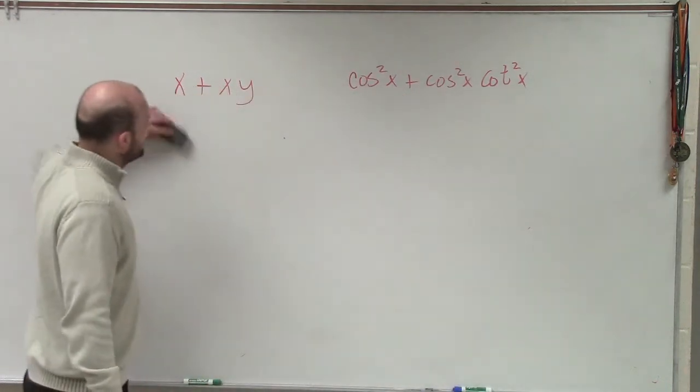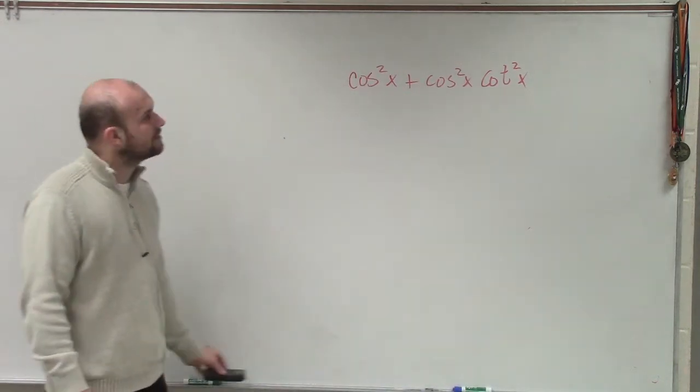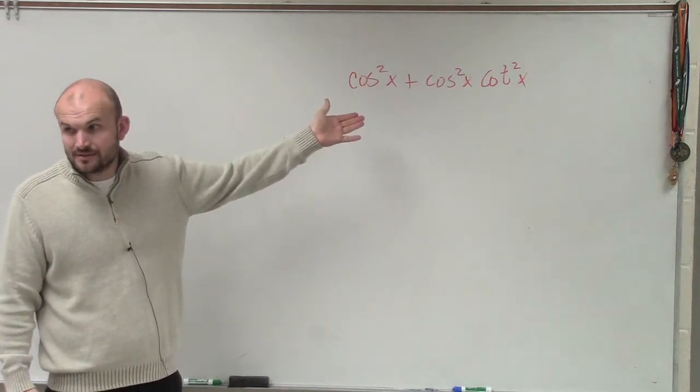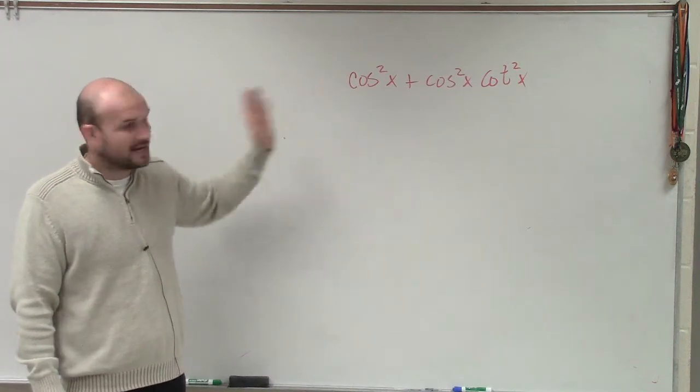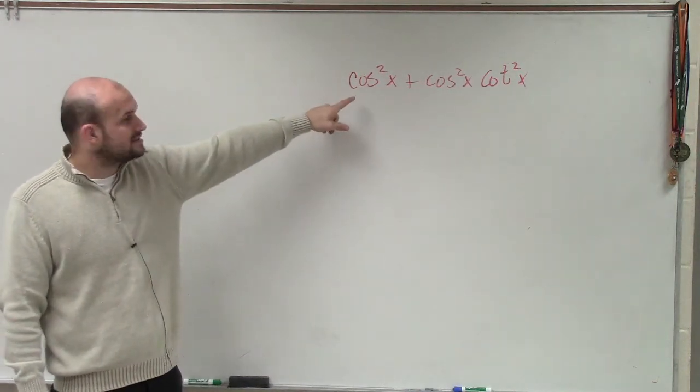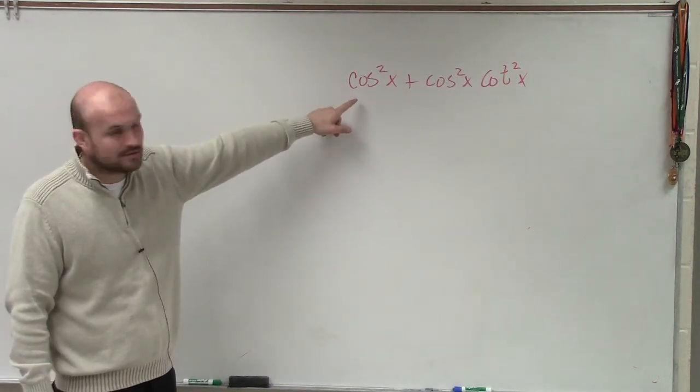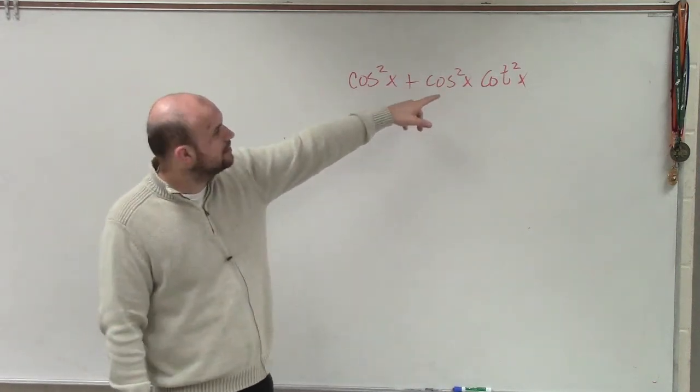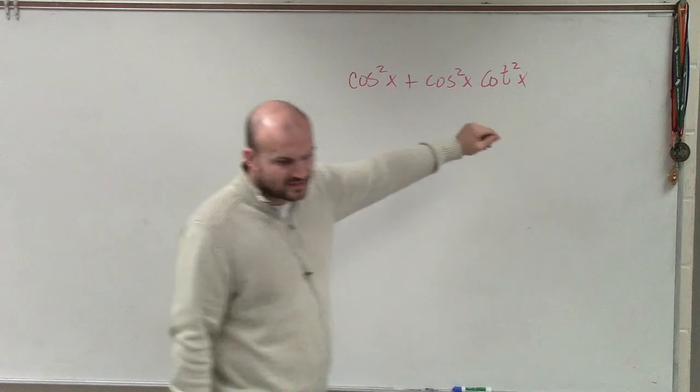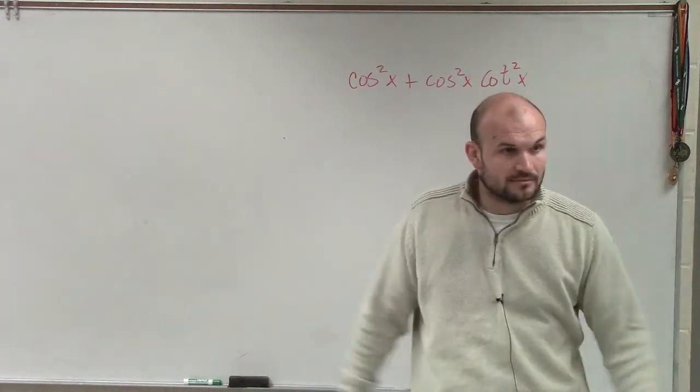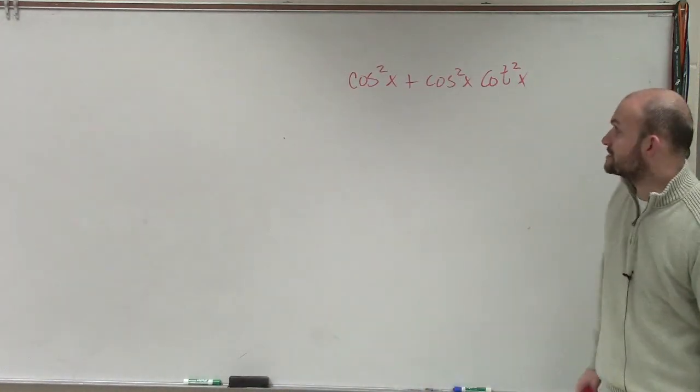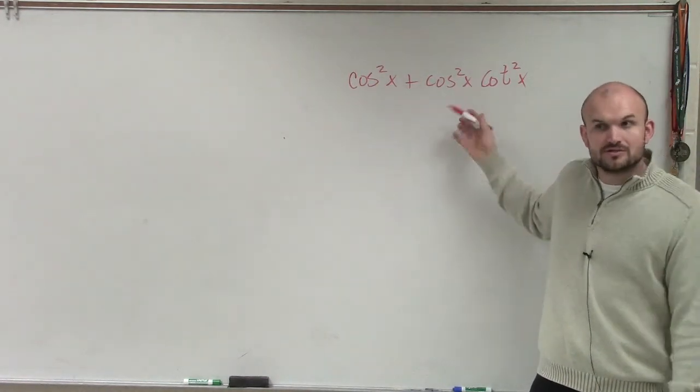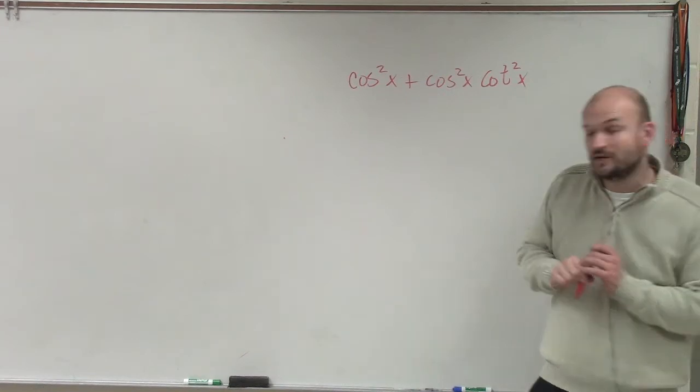So I need to go back and think, what else can I do? Well, I can convert these using my Pythagorean identities. I could convert cosine to 1 minus sine squared, or I can convert cotangent squared to cosecant squared minus 1. I could do both of those. But before I do that, I notice that both of these terms share a cosine. So one thing I might want to do is, how about I factor out a cosine?